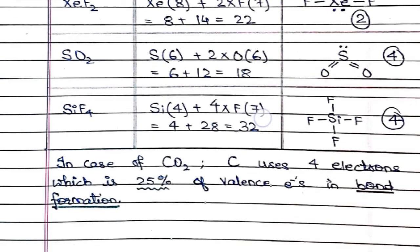So now, comparing all the cases, only in case of CO2, carbon uses four electrons which is 25 percent of the valence electrons in the bond formation. Thank you.